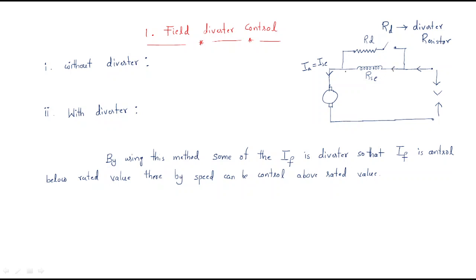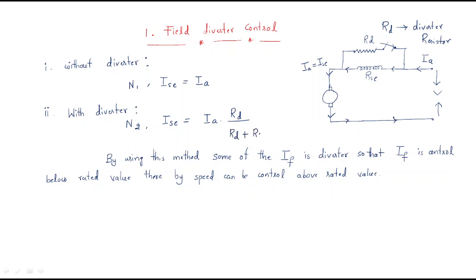Without the diverter, the supply current flows only one way and returns to the source. The number of turns is N1, and the series current is nothing but the armature current — so the series winding current equals the armature winding current. If you are using the diverter, the number of turns included becomes N2. Then, with the switch closed, the total current through the series winding is: armature current multiplied by the diverter resistance divided by the total resistance.